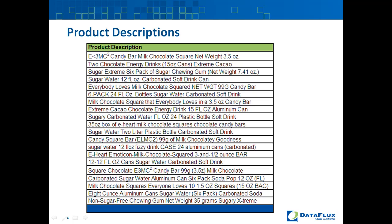Most products are organized into some type of a hierarchy or taxonomy — an organizing paradigm that divides and conquers the product data challenge. This hierarchy also typically reflects the subject matter expertise that will exist within the organization.